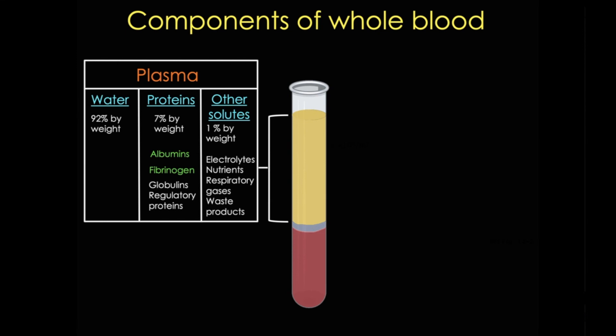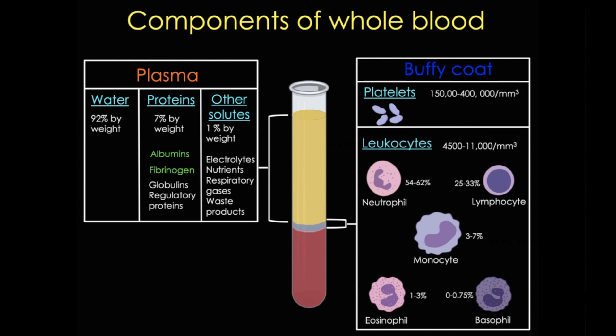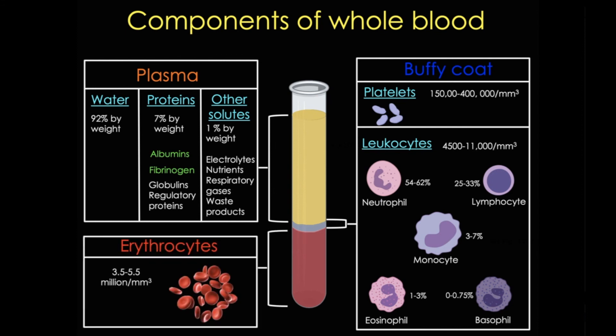Now the next layer is the so-called buffy coat. This is a thin layer, only about 1% of the volume, but it contains the platelets that are important for coagulation, and the leukocytes or white blood cells, which are the body's chief defenses against infection. And finally, the lowest layer — the sedimented material — consists of erythrocytes or red blood cells, which make up anywhere from 35 to 50% of the volume. We can actually measure this volume, and we call that the hematocrit.